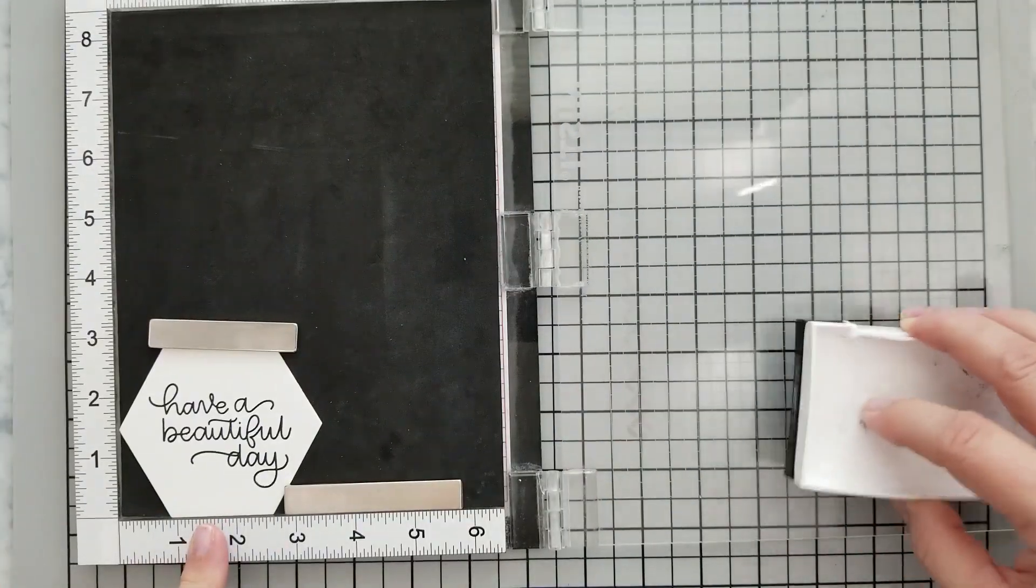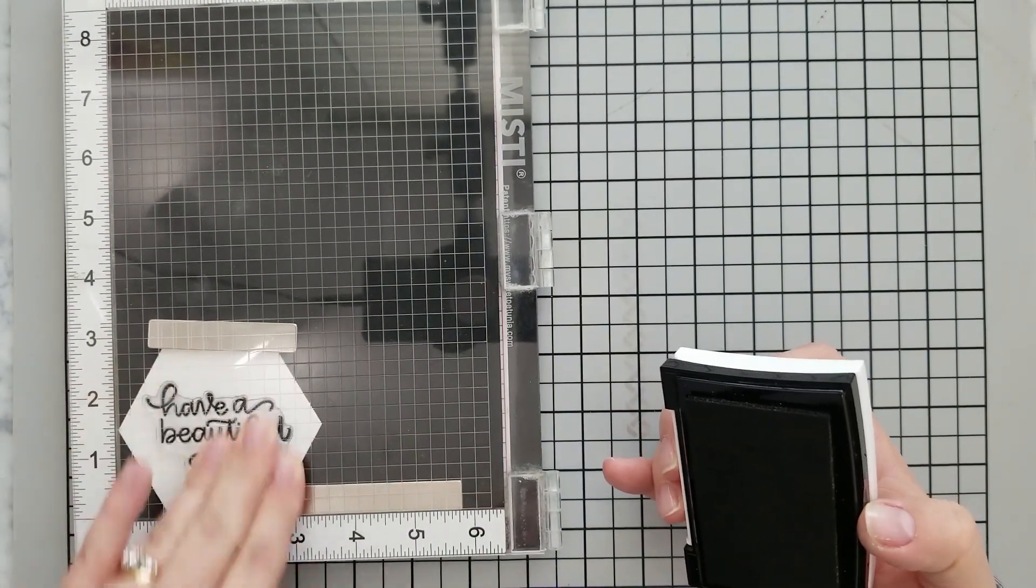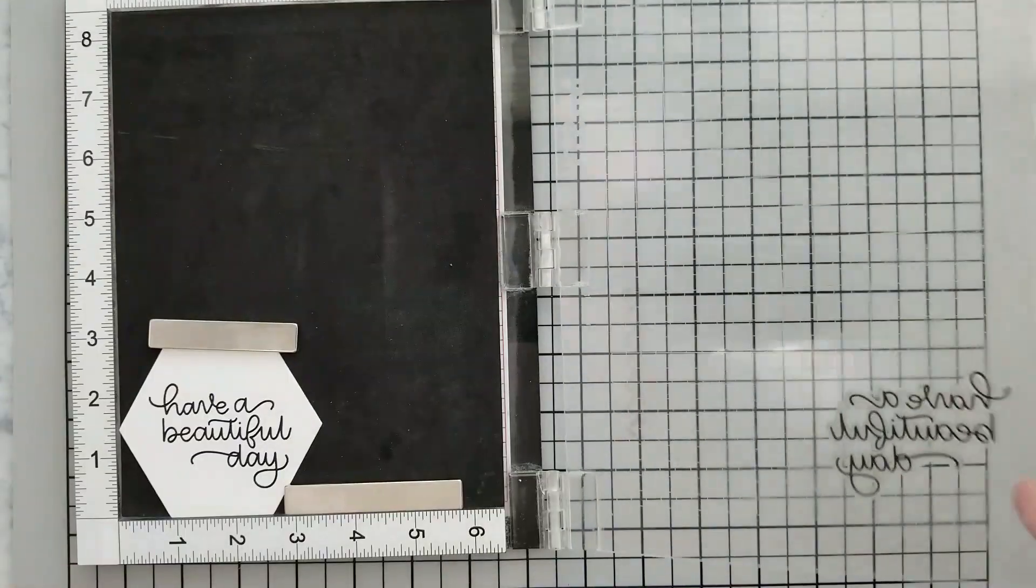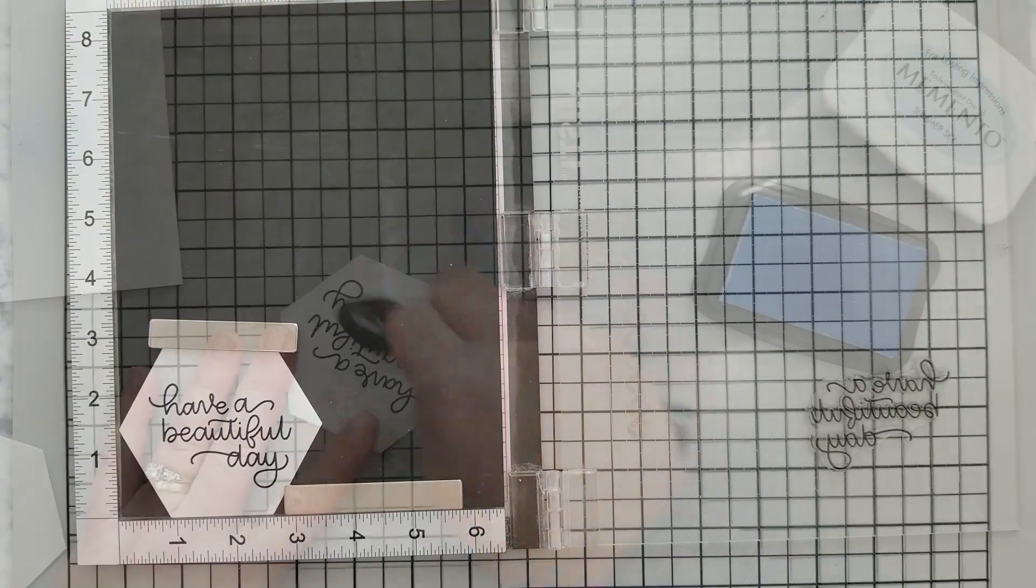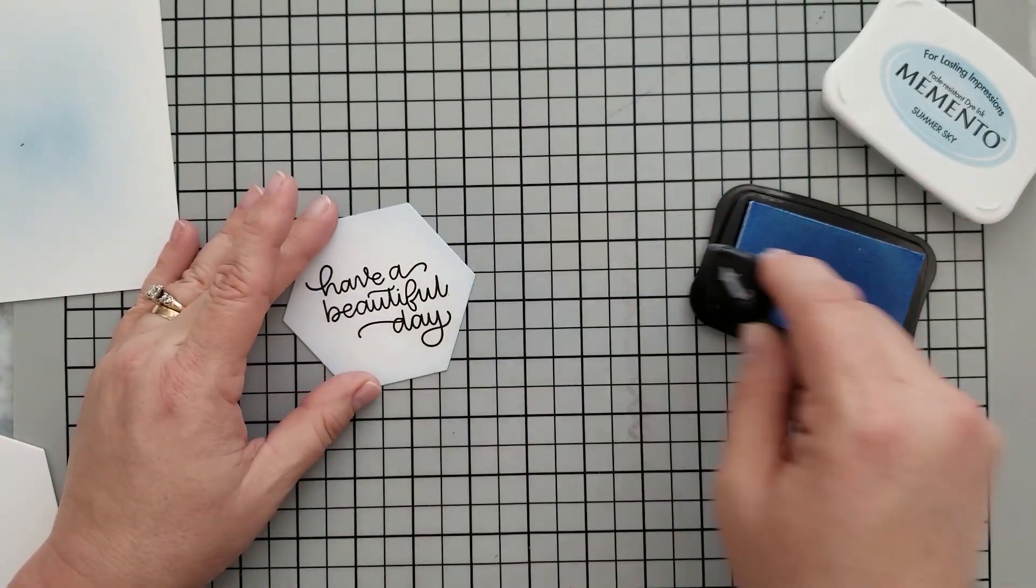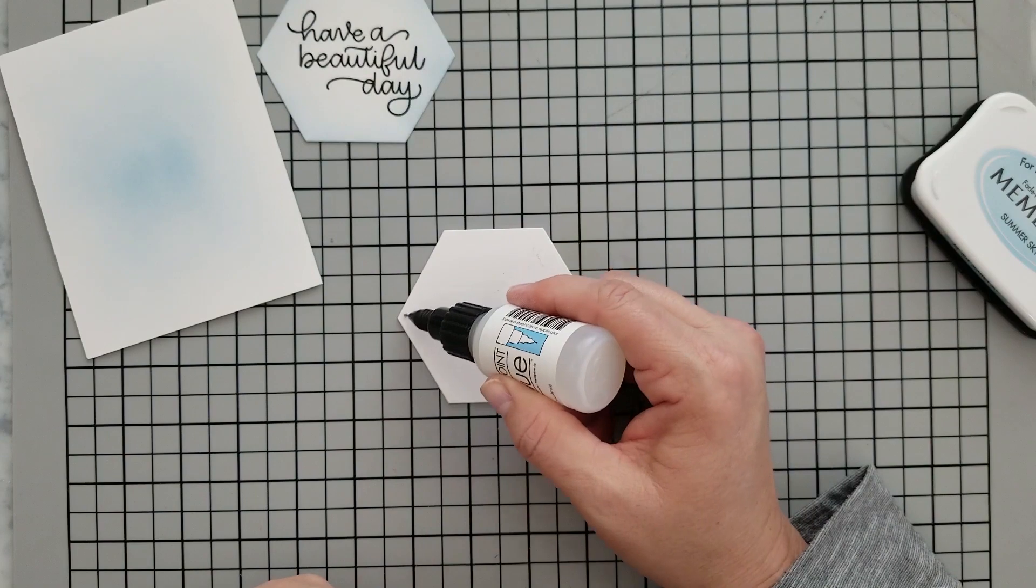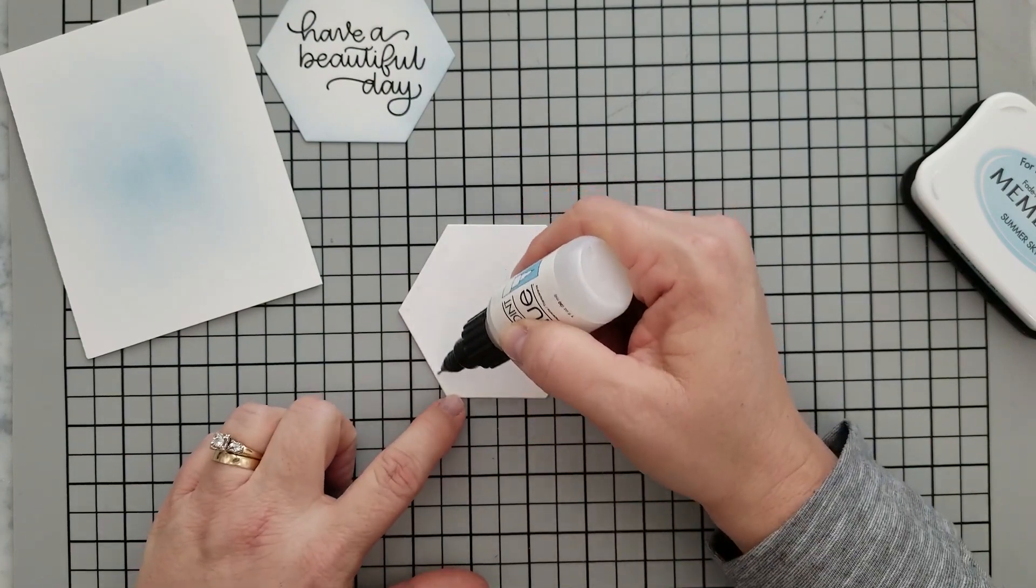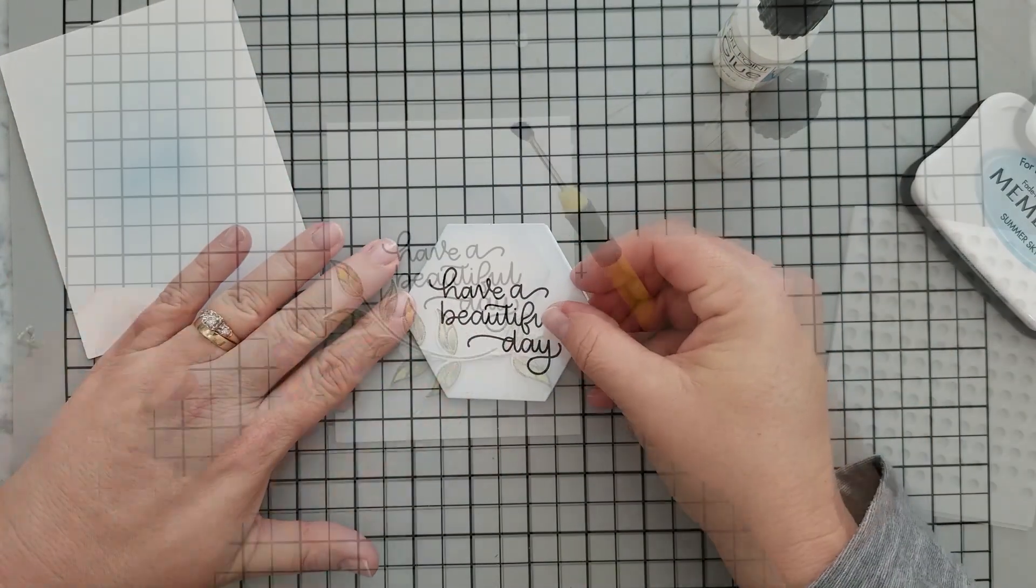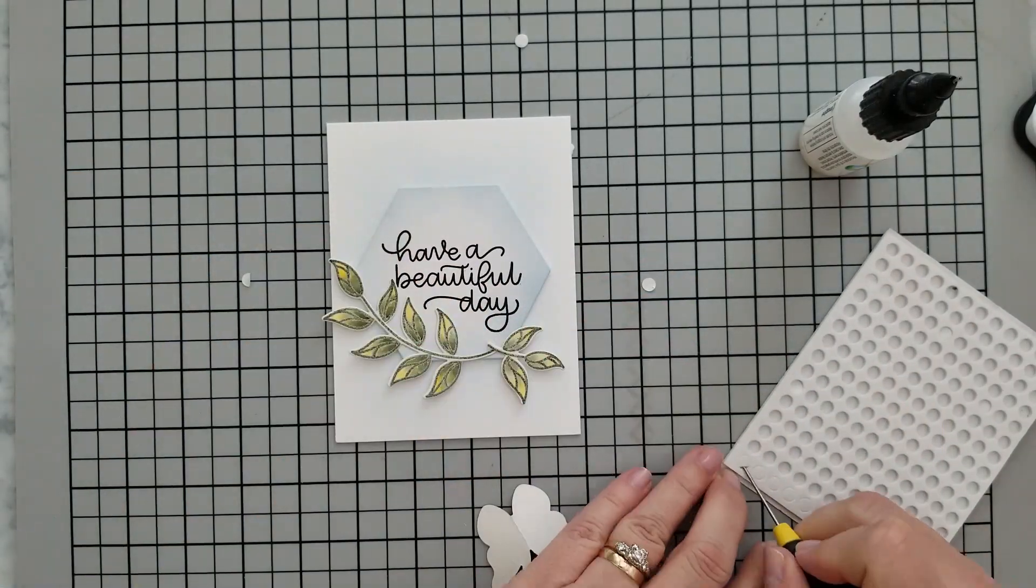Now off screen I ran some white cardstock and a hexagon die through my die cut machine four times. I'm going to stamp my sentiment using Versamark Onyx Black ink on one of those hexagons. Then I'm going to come in with my Summer Sky right around the edge of that and add some ink to blend it into the background. We're going to take the rest of those hexagons and our own point glue and stack them all together so we can create some dimension on the card. Go ahead and use your own point glue to center that onto the front of your card base.